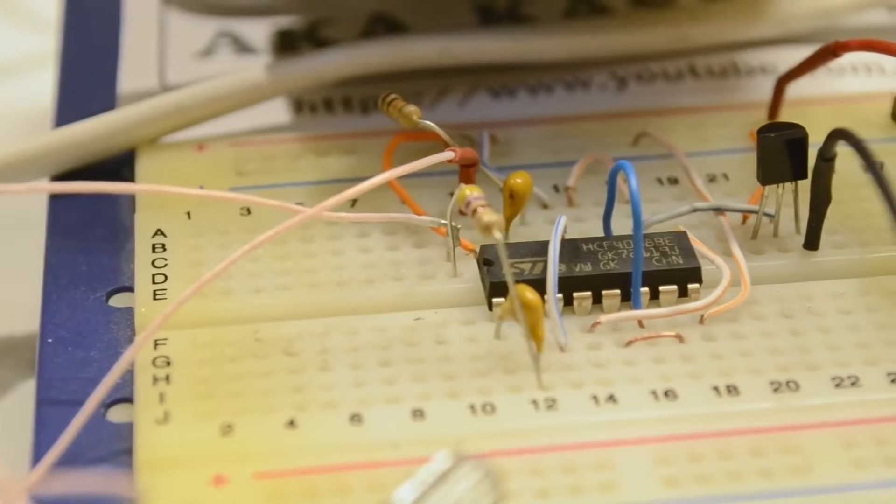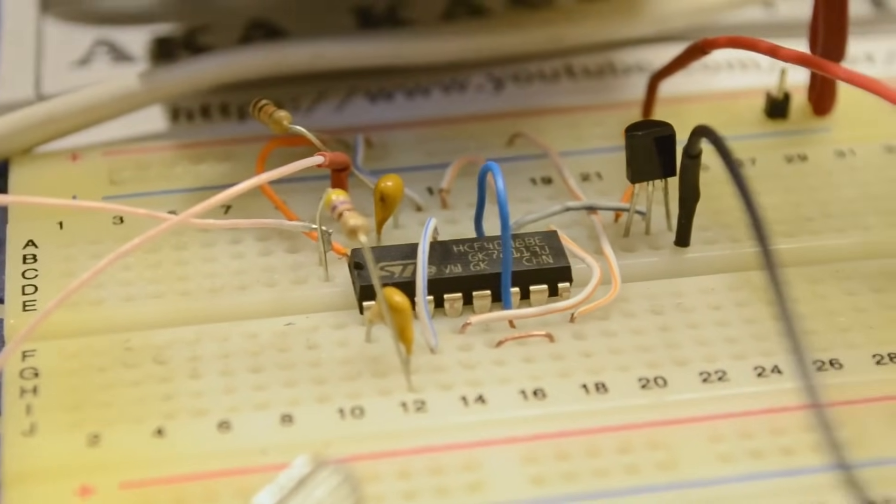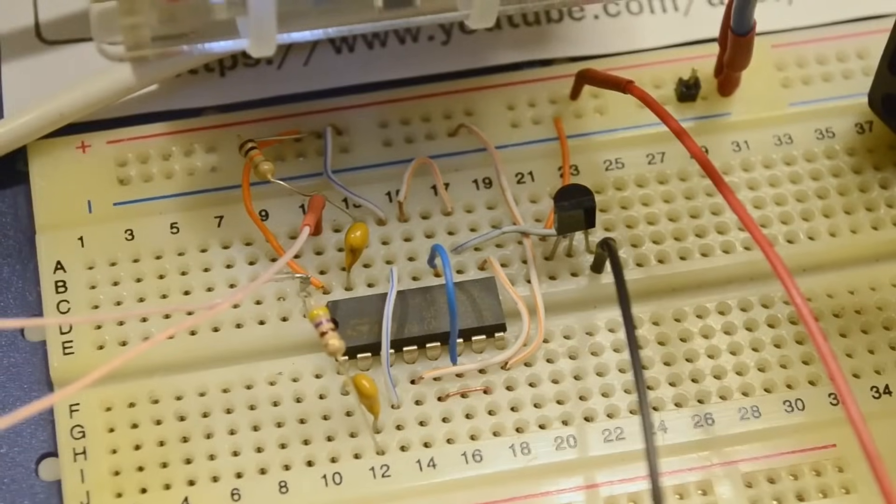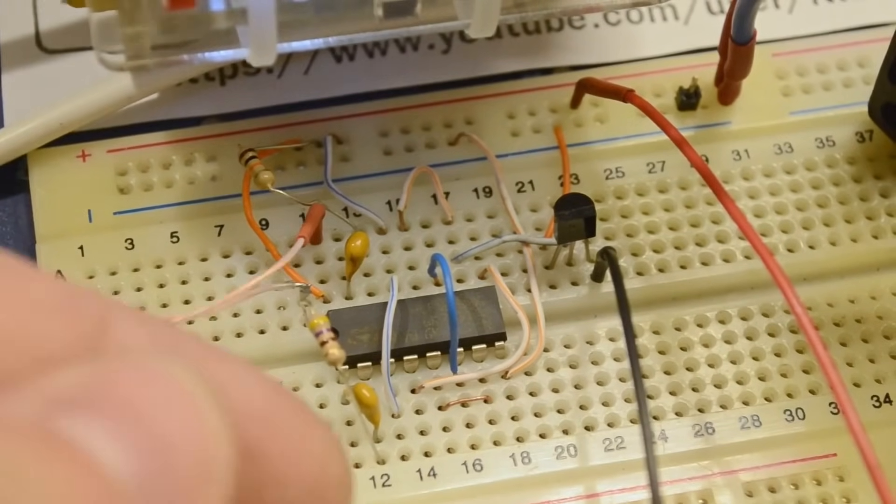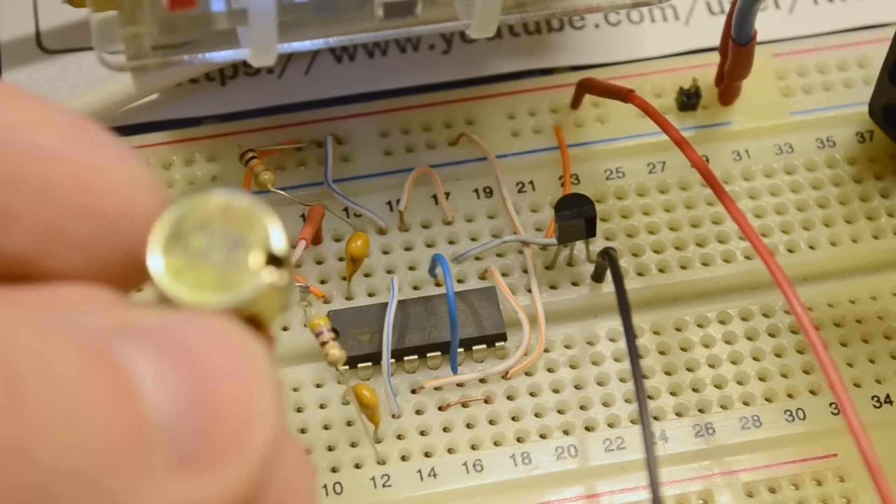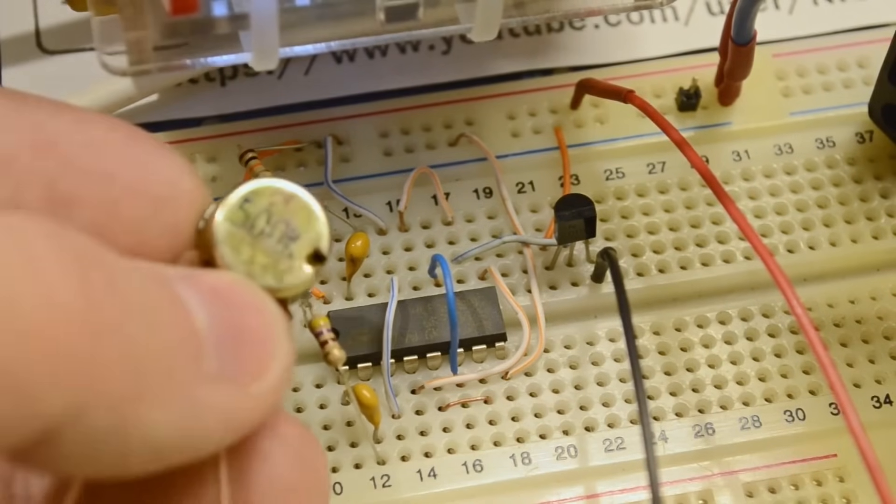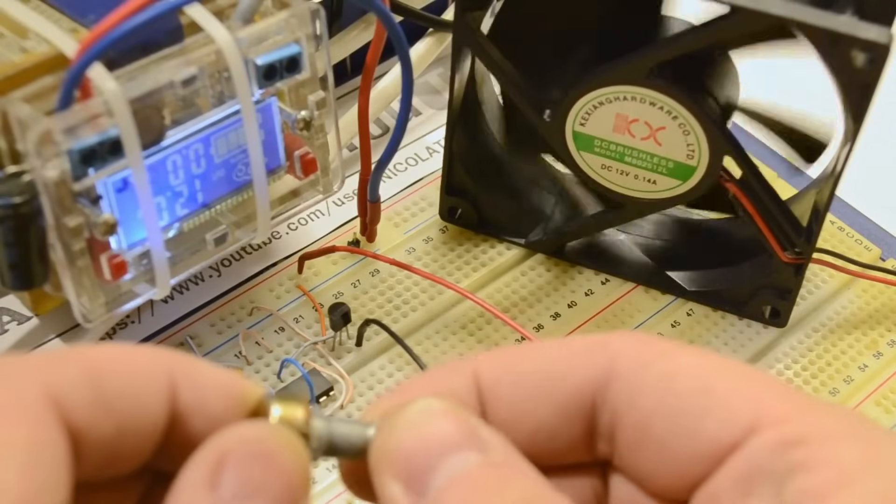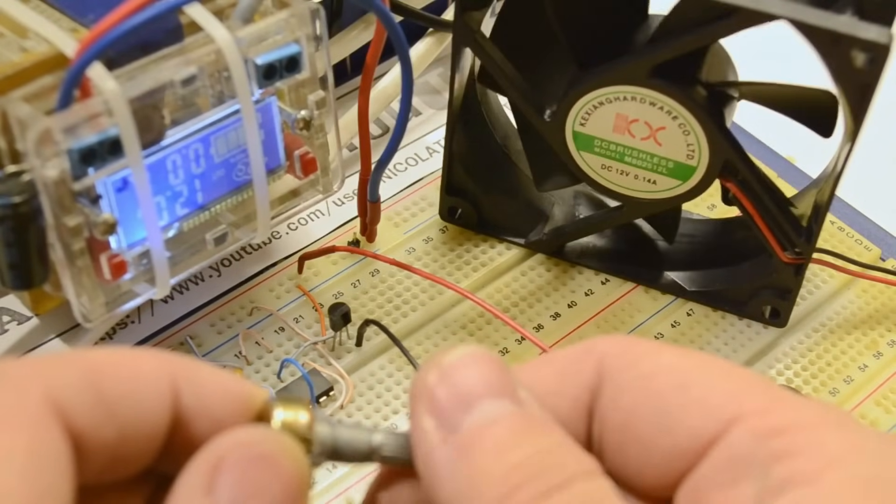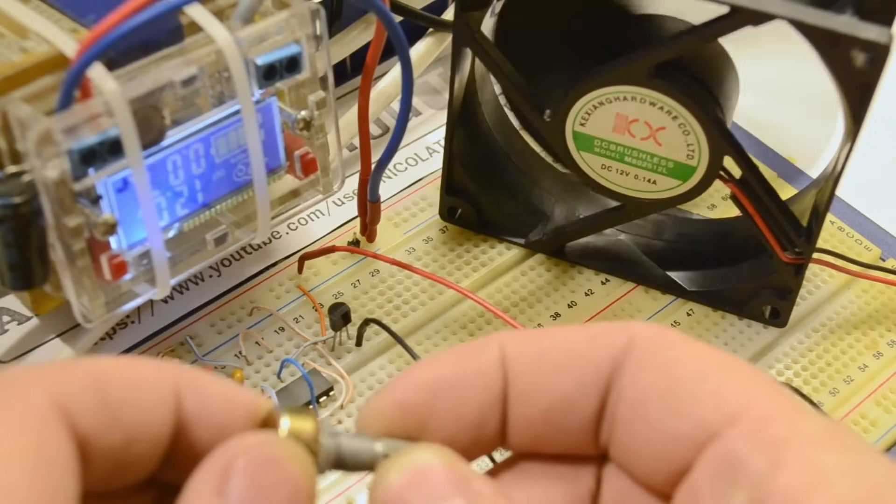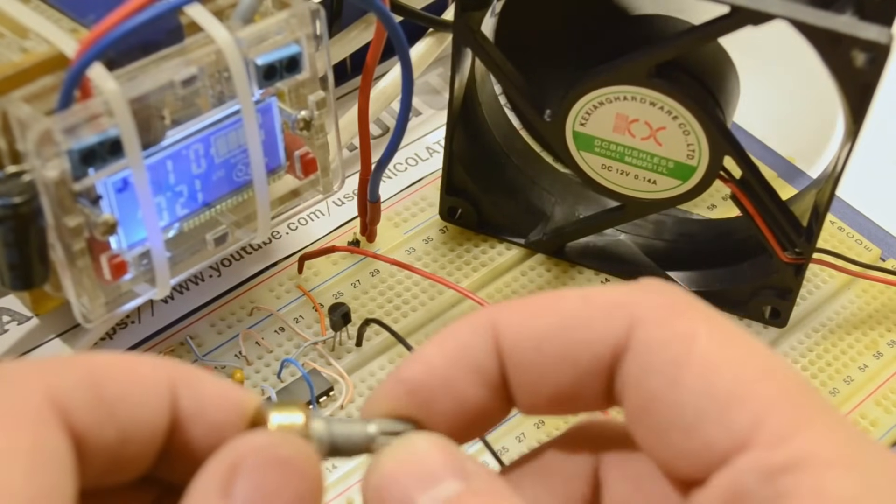The fourth circuit will be based on the K1561AG1 chip, or its foreign equivalent, the CD4098. This chip is a dual monostable multivibrator made using CMOS technology. A monostable multivibrator is a device capable of generating a single pulse. The circuit includes two such monostable multivibrators. One triggers the second, after which the second triggers the first. And so it goes in a loop.